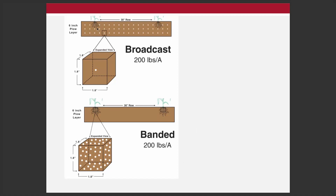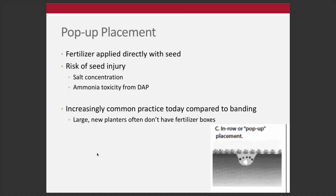Imagine the same amount of fertilizer applied broadcast versus banded — it might be the exact same total weight, but put in a much smaller space. That's the whole idea with banding. Pop-up, or in-furrow, puts fertilizer directly with the seed — this can be dry or liquid fertilizer. For phosphorus, it would most commonly be MAP, 10-34-0, or APP for liquid. Anytime we're putting fertilizer directly with seed, there's always a risk of seed injury from salts or ammonium, and we have to be careful.